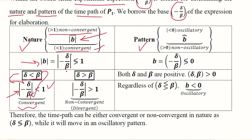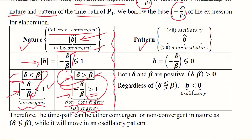This means the time path of the cobweb model would be convergent. But if delta is greater than beta, then the numerator will be greater than the denominator, meaning the expression in absolute terms will be greater than one. This results in a non-convergent, or divergent, case. Having understood convergence and divergence, we can now turn to the pattern of the time path.